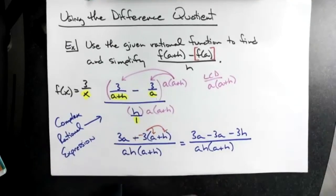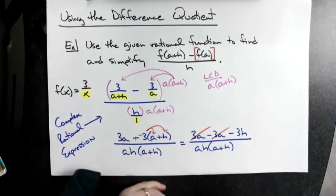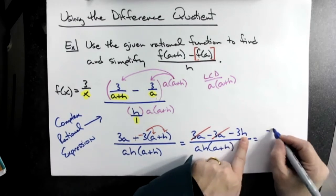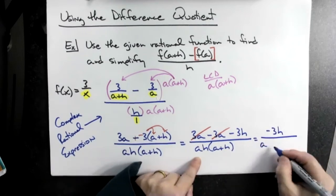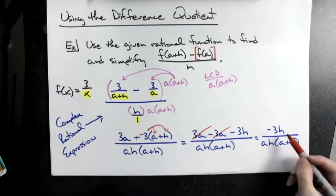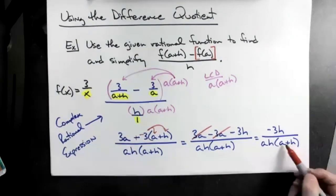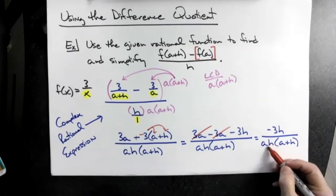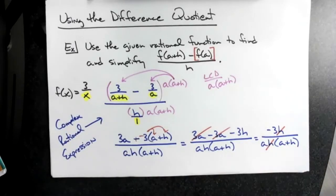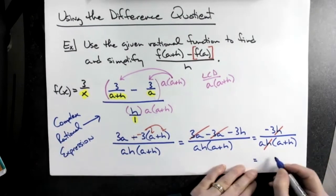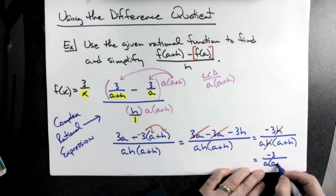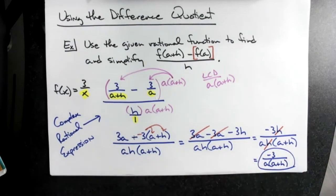From here, 3a minus 3a crosses out — that's good. Rewriting, I have negative 3h on top and a·h·(a+h) on the bottom. I don't want to distribute the bottom yet, because there's an h on top and an h on the bottom — since it wasn't distributed, it's already factored and sitting out front. So I can legally cross out the h with the h. The final answer is negative 3 over a(a+h).